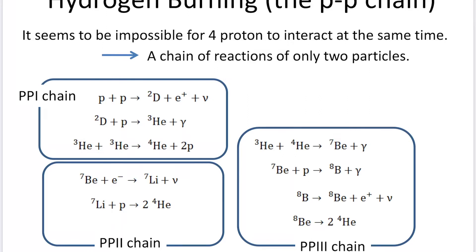The PP1 chain begins with a proton reacting with a proton to produce deuterium, plus a positron and a neutrino. Then deuterium reacts with a proton to produce helium-3, plus a gamma photon. And helium-3 reacts with another helium-3 to produce helium-4 and two protons. This is what we call the PP1 chain.